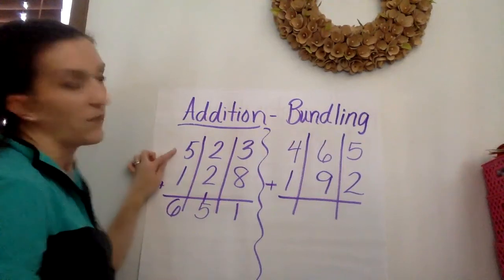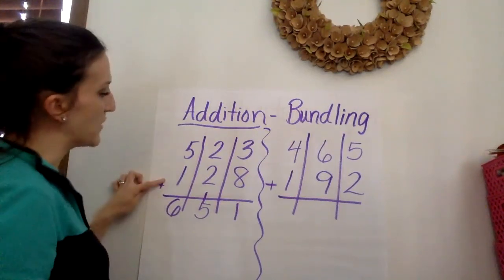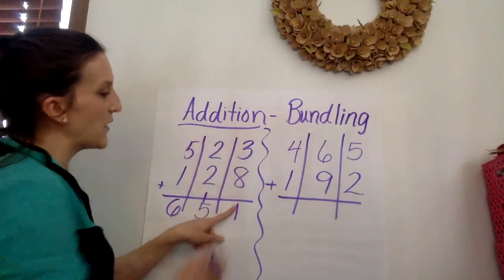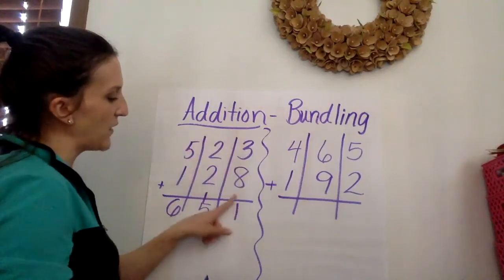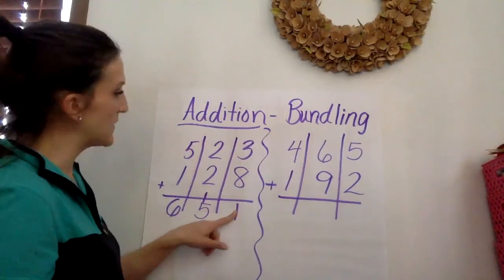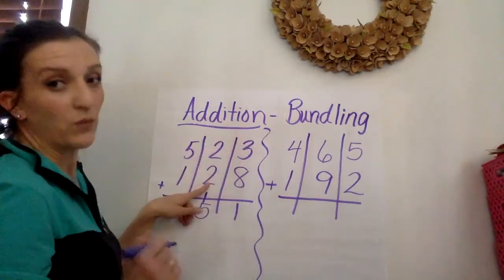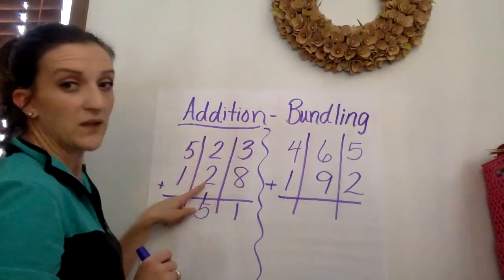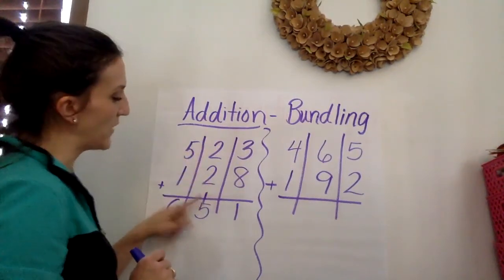So again when we added 523 plus 128 we started in the ones place. 3 plus 8 was 11. One stays, a group of 10 is bundled and it moves next door to the tens place. 2 plus 2 is 4 plus 1 is 5.